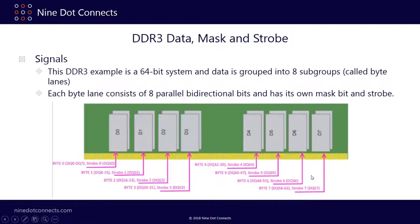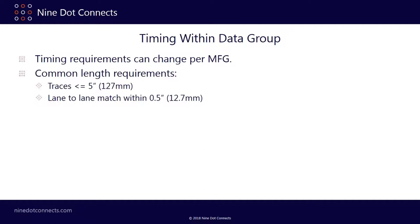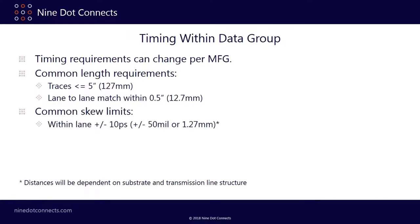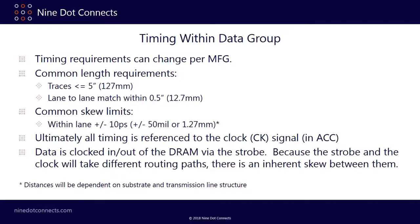SODIMMs have gotten quite compact — now often 128-bit, giving 16 lanes. Within the data group, timing requirements can differ from chip to chip. Common length requirements from app notes: traces should not exceed five inches, and lane-to-lane match needs to be within half an inch. Skew limits within a lane should be no more than 10 picoseconds. Ultimately, all timing is referenced to the clock signal in the ACC group, but importantly, data is clocked in and out of the DRAM via the strobe, not the clock.